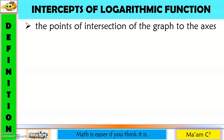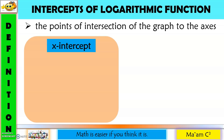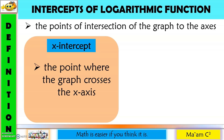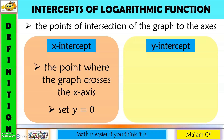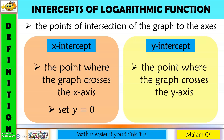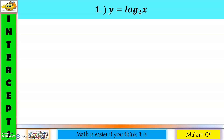Intercepts are points of intersection of the graph to the axis. The first one is the x-intercept — it is the point where the graph crosses the x-axis. The x-intercept is also called root, solution, or zero of a function, and it can easily be solved by setting y equal to zero. The next one is the y-intercept — the point where the graph crosses the y-axis — and it can be solved by setting x equal to zero.